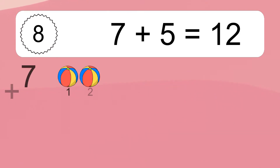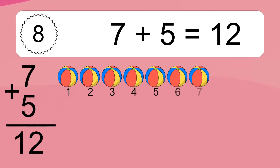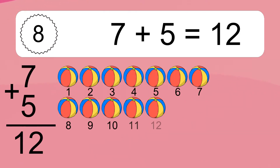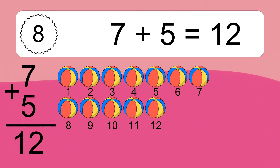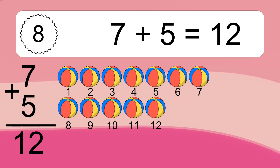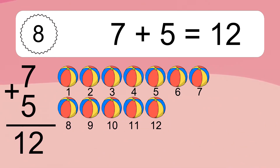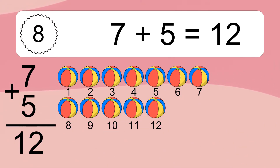7 plus 5 equals what? 7 plus 5 equals 12. Let's count it: 1, 2, 3, 4, 5, 6, 7, 8, 9, 10, 11, 12.